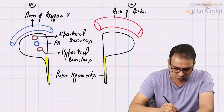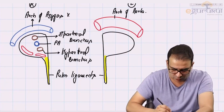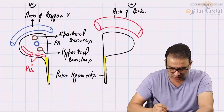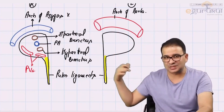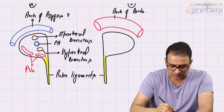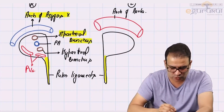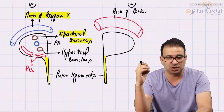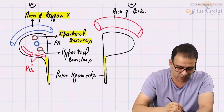The most anterior and most inferior structure in both the right and the left root of lung is the pulmonary veins — carrying oxygenated blood. So clearly, on the right side, the eparterial bronchus is the highest structure in the root of lung, closest to the arch of azygous vein. That is an important point: on the right side, the highest structure is the eparterial bronchus.